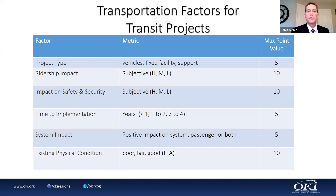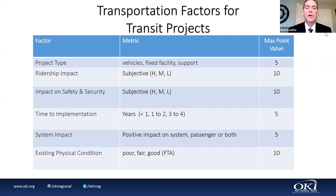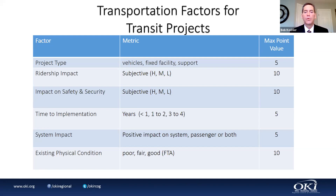Moving on to transportation factors for transit projects — there are six elements. Project type looks at whether it's vehicles, fixed facilities, or support: vehicles score five, support scores one. Ridership impact is worth 10 points and is a subjective score — be honest with us. A high impact on ridership could score 10; if it's low, it will score less.